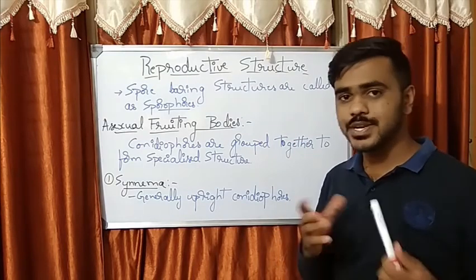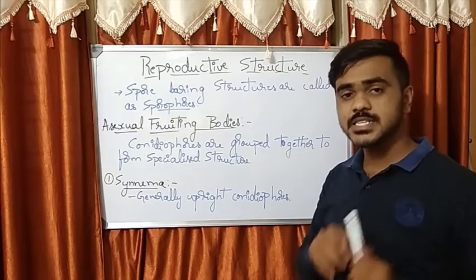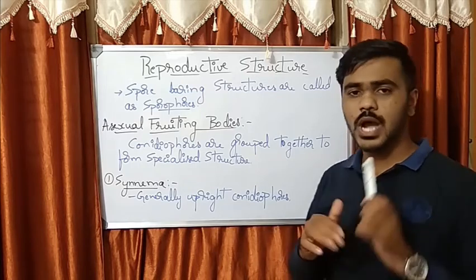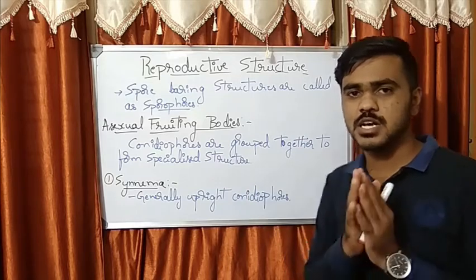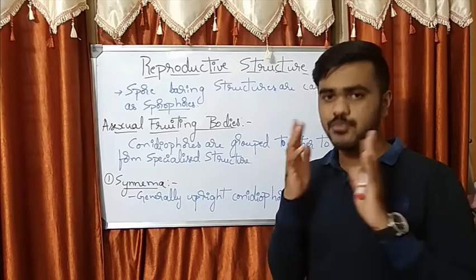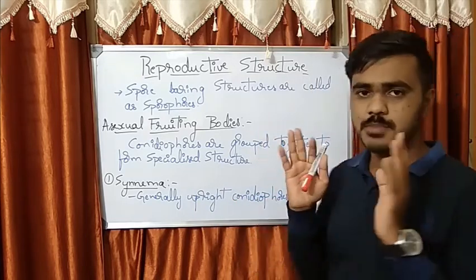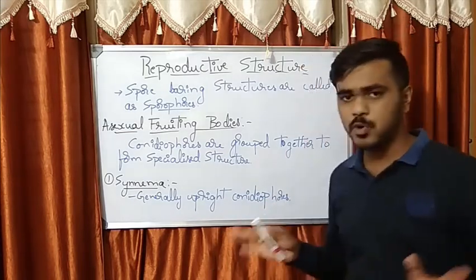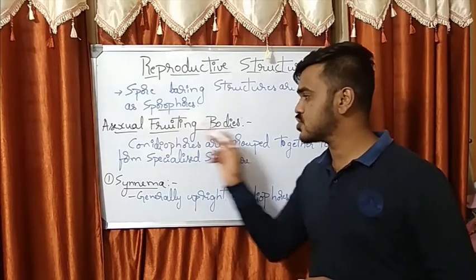A reproductive structure is generally called a sporophore, whether it is simple or complex. When we go to higher fungi, the fruiting bodies are complex — the spore-bearing structures are complex — and there we call them fruiting bodies. Among them there are two types: simple and complex. These are spore-bearing structures. Next we shall see the asexual fruiting bodies.